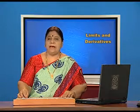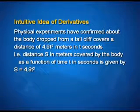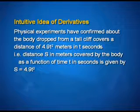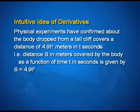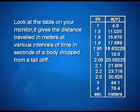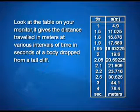Now let us have some intuitive idea of derivatives. Physical experiments have confirmed that a body dropped from a tall cliff covers a distance of 4.9t² meters in t seconds. That is, distance s in meters covered by the body as a function of time t seconds is given by s = 4.9t². The table on your monitor gives the distance travelled in meters at various intervals of time in seconds of a body dropped from a tall cliff.